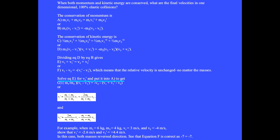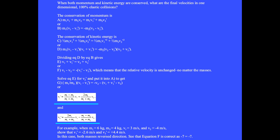Solving equation E for v2-prime and substituting into equation A gives the final velocity of mass 1 after the collision, and separately the final velocity of mass 2. These two equations give v1-prime and v2-prime for any given values of mass 1, mass 2, v1, and v2. For example, please show that when m1 equals 6 kg, m2 equals 4 kg, v1 equals 3 m/s, and v2 equals minus 4 m/s, then v1-prime equals minus 2.6 m/s and v2-prime equals plus 4.4 m/s — both masses reverse direction. Also verify that equation F gives minus 7 m/s equals minus 7 m/s.